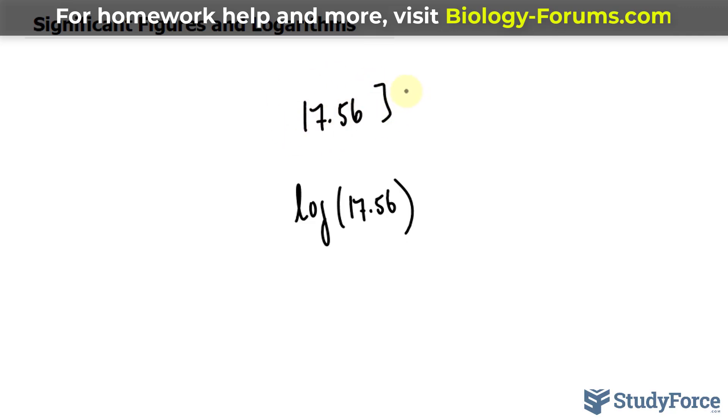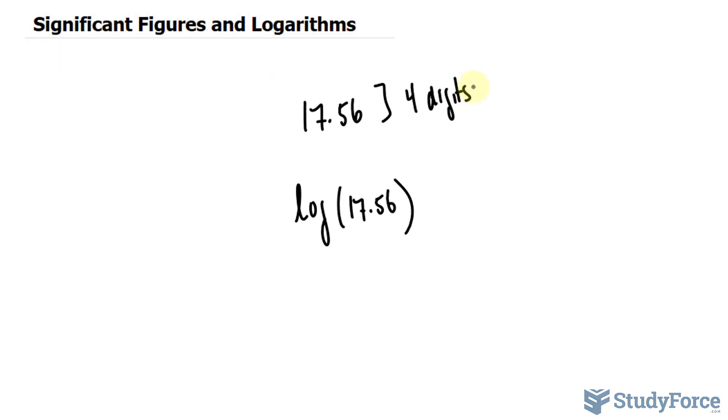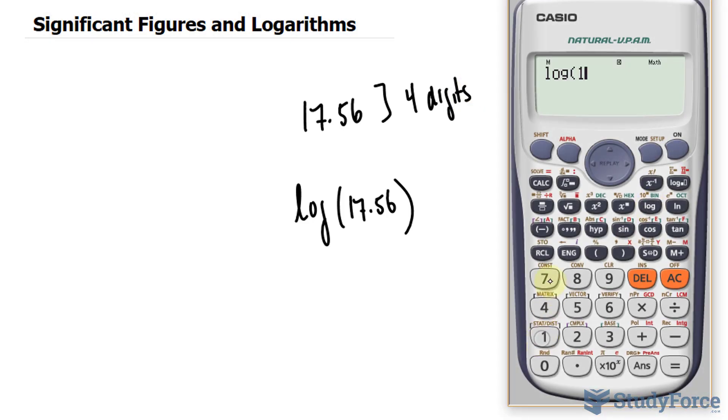Notice that this number has four digits, and we'll assume that all four digits are significant. Now, when we take the log of 17.56, we end up with this long number, 1.24452, and so on.